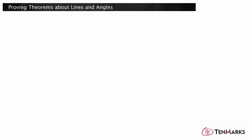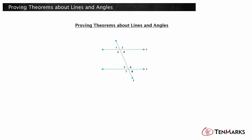In this video, you will learn how to prove theorems about lines and angles, and to use the proof to identify a missing measure. When a pair of parallel lines are intersected by a transversal, special pairs of congruent and pairs of supplementary angles are formed.